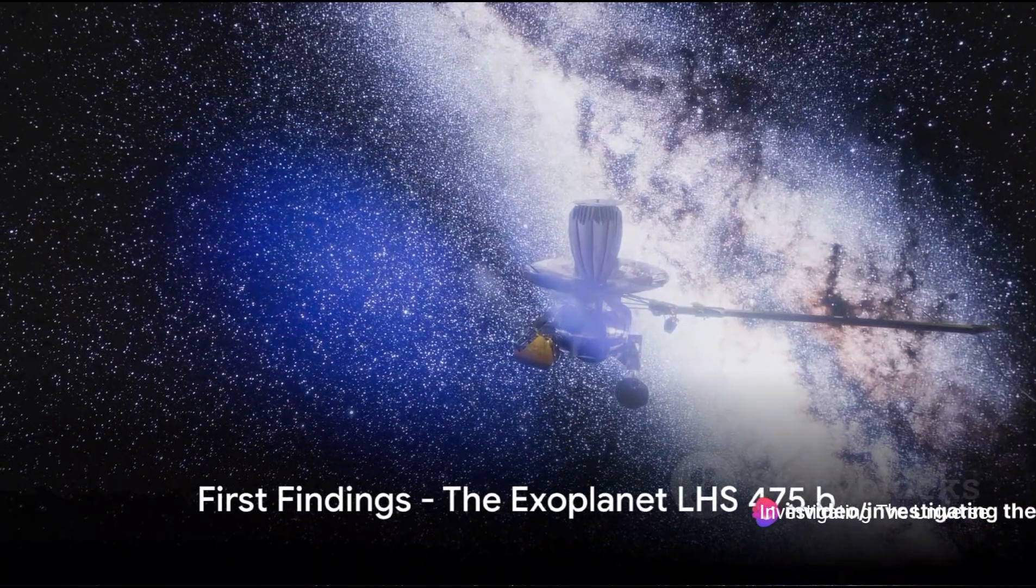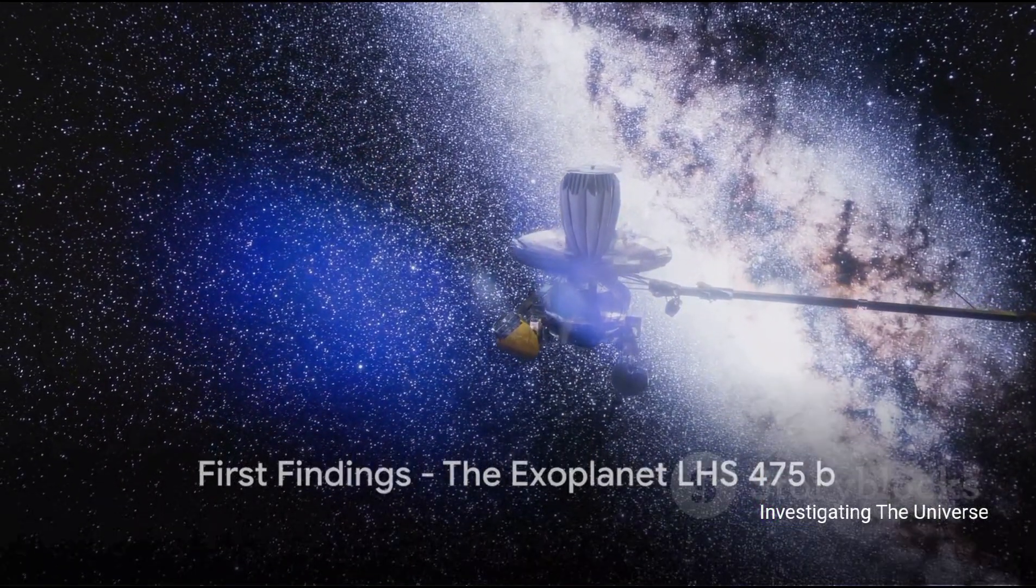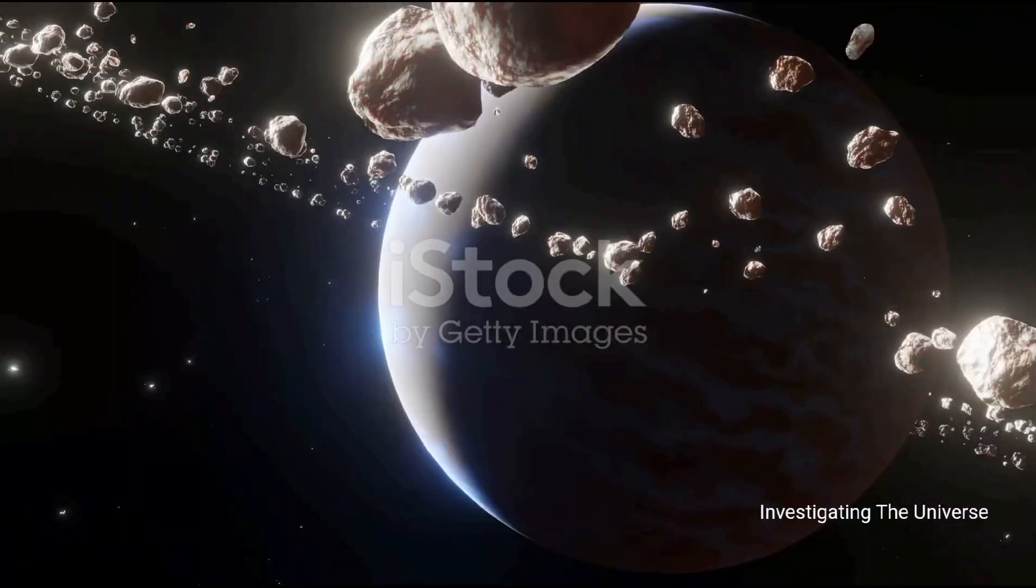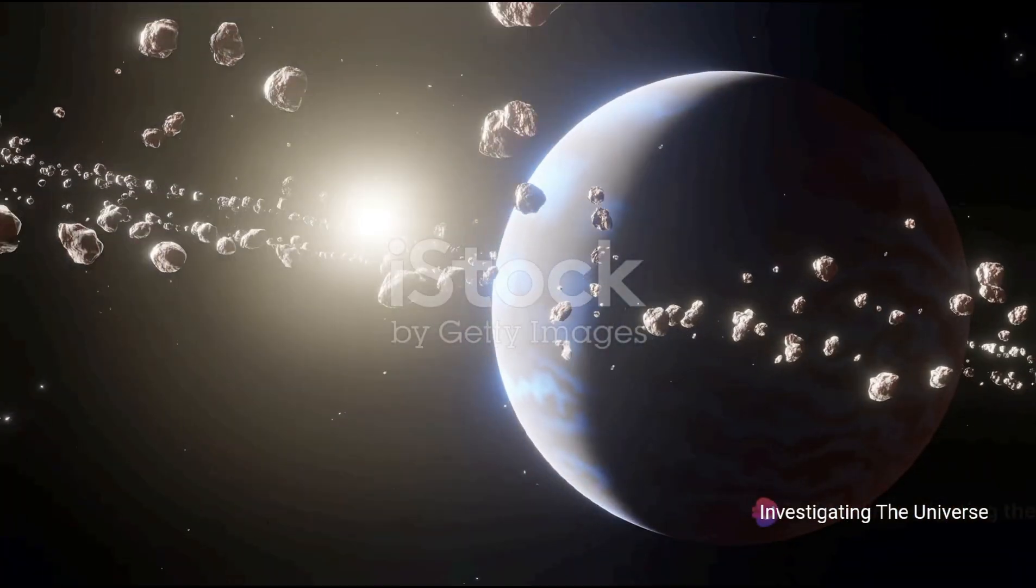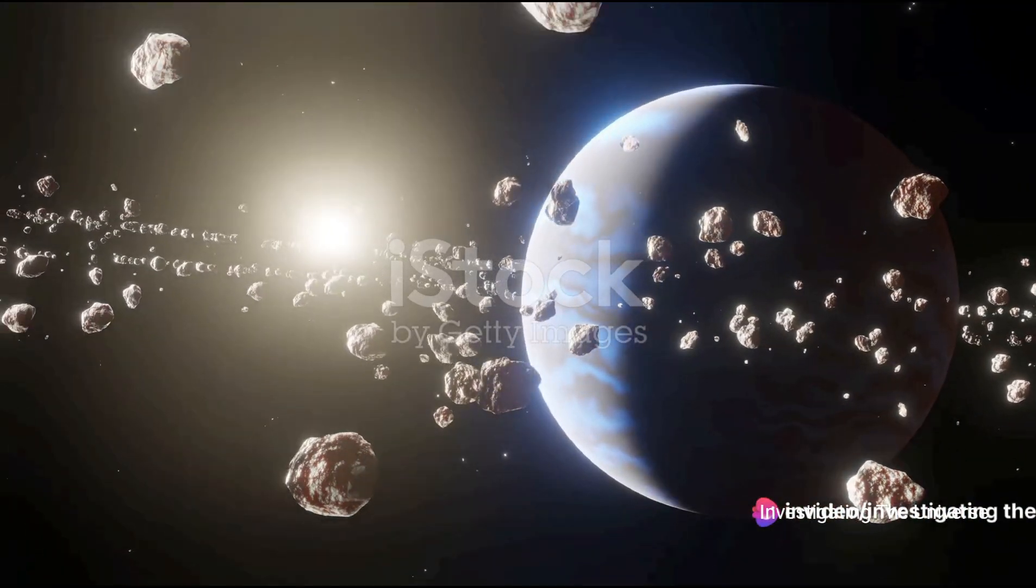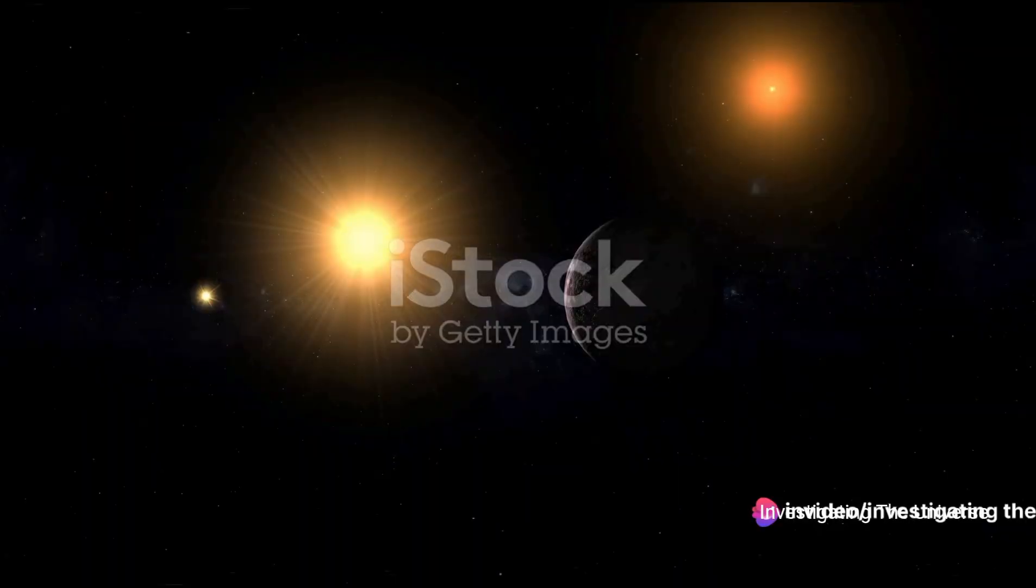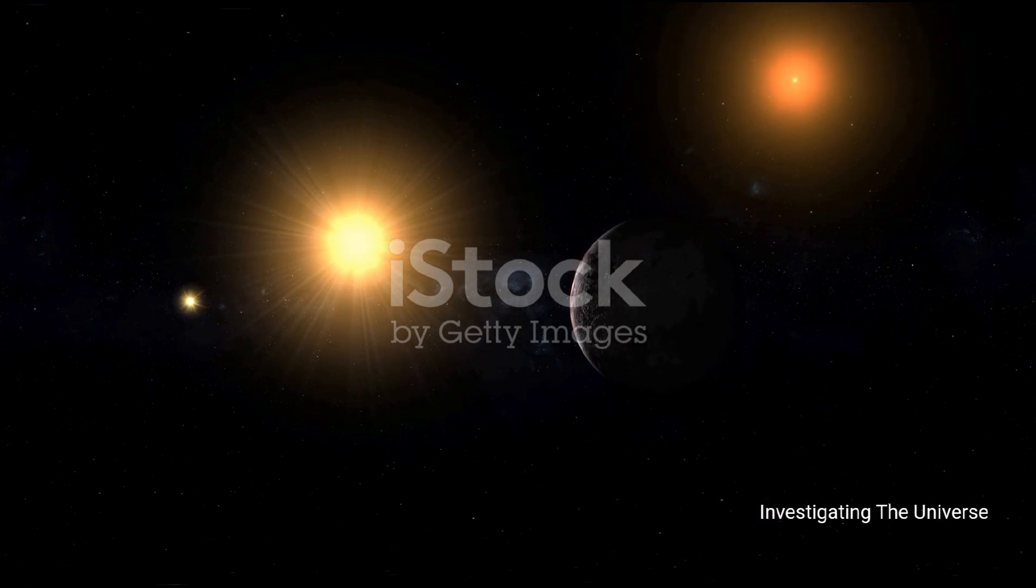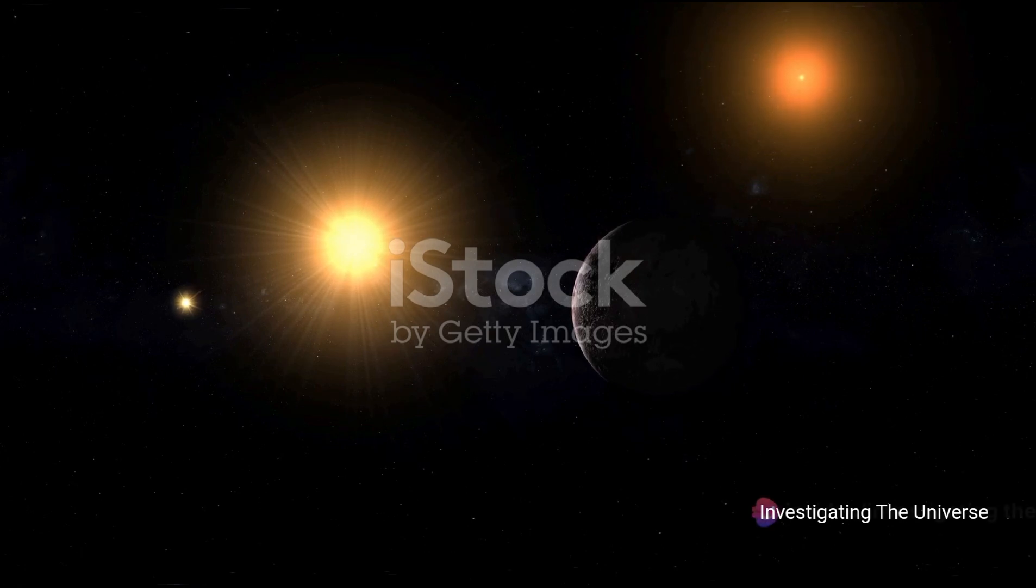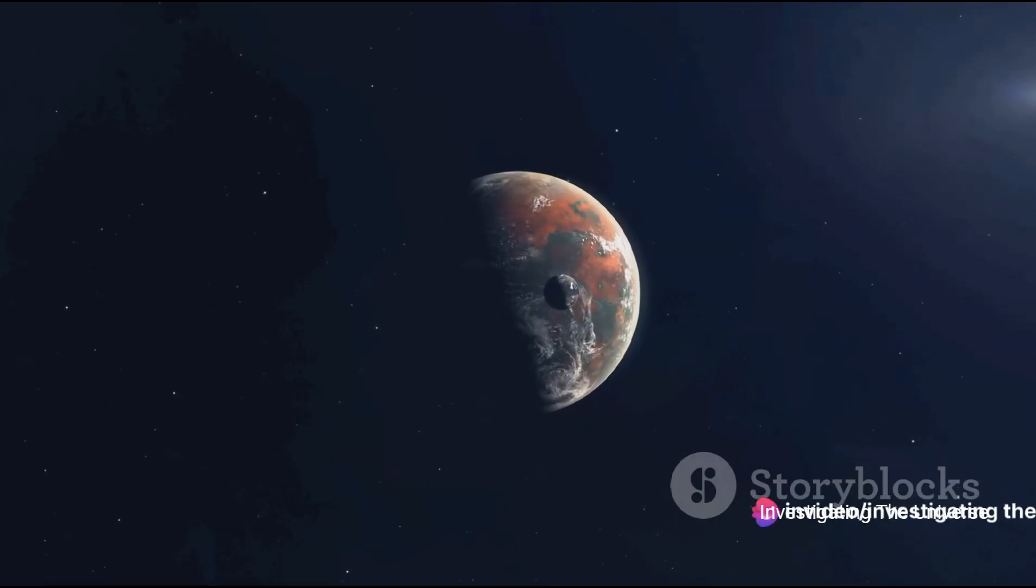The Webb's first major discovery was an Earth-sized exoplanet named LHS-475b. This celestial body, found 41 light-years away, is not just another name on the long list of exoplanets. It's a unique find, an intriguing world that has sparked a whirlwind of scientific curiosity. LHS-475b is roughly the size of our own Earth, but don't pack your bags just yet.